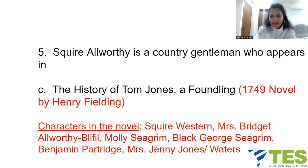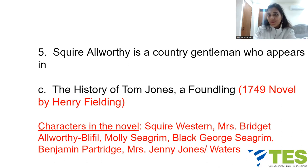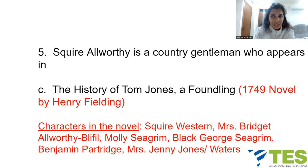The major characters in this novel include: Squire Western, the virtuous girl Sophia; Mrs. Bridget Allworthy Blifil, sister of Squire Allworthy and wife of Blifil; Molly Seagram; Black George Seagram; Benjamin Partridge; and Mrs. Jenny Jones, also known as Mrs. Waters, who is a very cunning character.